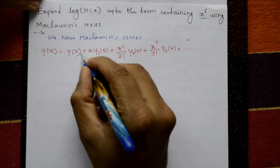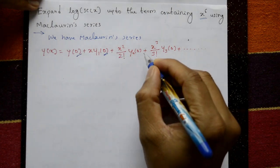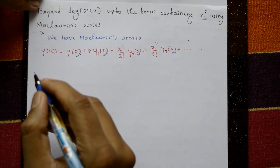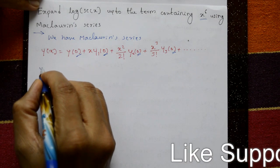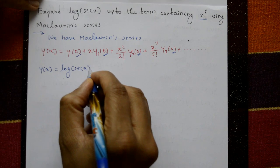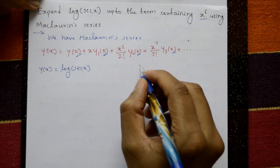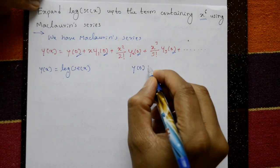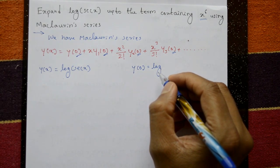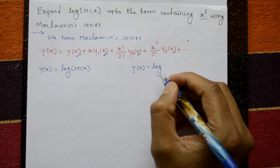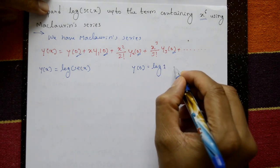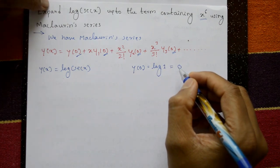We need y(0), y1(0), y2(0), y3(0) up to y6(0). Given y(x) = log(sec x). Put x = 0: sec x means 1/cos x, and cos 0 = 1, so 1/1 = 1. Thus log(1) = 0, so y(0) = 0.